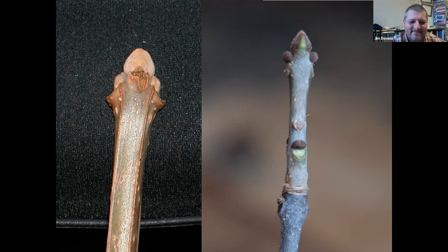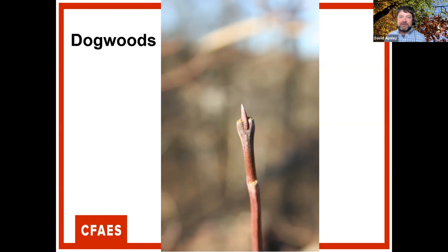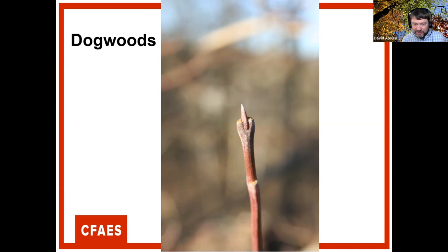Ash twigs typically have three buds at the tip: two lateral buds and one terminal bud. Flowering dogwood has a distinctive twig with a large terminal bud and very small side buds on a reddish-green twig — it can look like someone is giving a thumbs-up or flipping the bird, but once seen it's memorable.